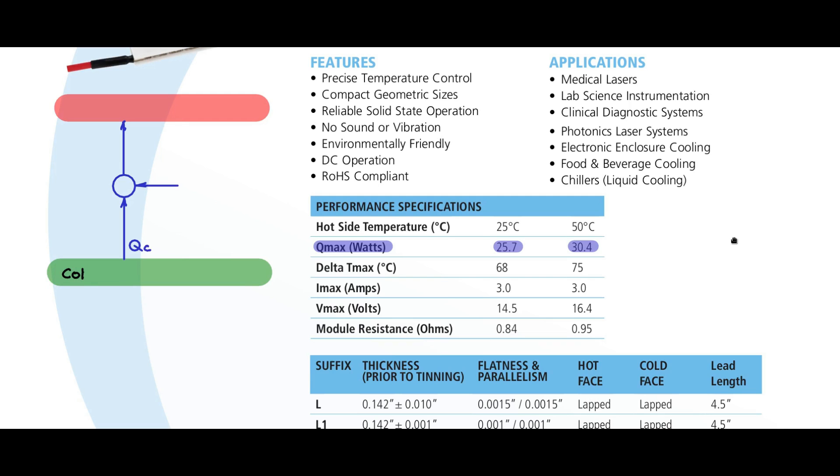Now, we are calling here this as the cold junction at temperature T1. We are calling this as the hot junction at temperature T2. The difference between T2 and T1 is called delta T. So delta T equals T2 minus T1 and that is specified here, delta T max.